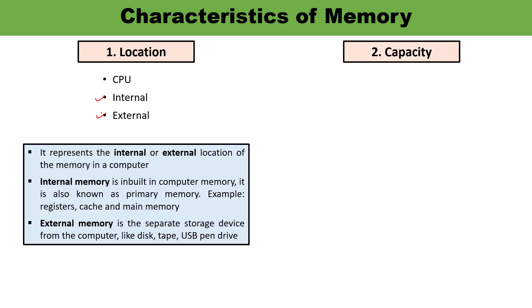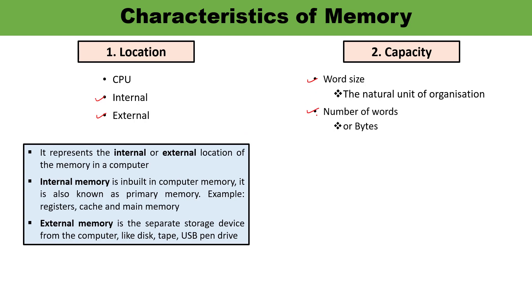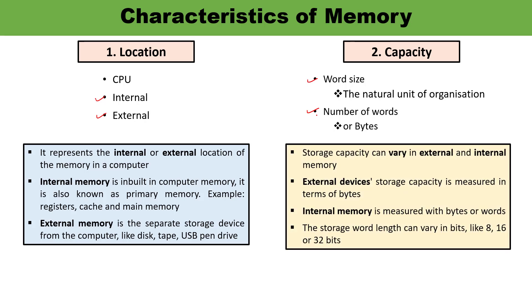The second parameter is capacity, the most important feature of computer memory. Word size means the natural unit of organization — measured in number of words or bytes. You must know the size and capacity of the memory you are discussing. Storage capacity can vary between internal and external memory. External device storage capacity is measured in bytes, whereas internal memory is measured in bytes or words. Storage word length can vary: 8, 16, or 32 bits.